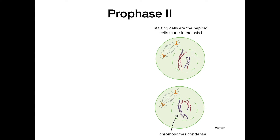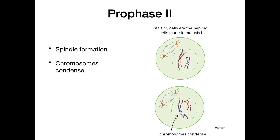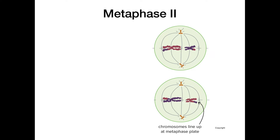Moving on to meiosis 2 — we just finished meiosis 1, so now we move on to prophase 2. This is a pretty similar process to prophase of mitosis, though at this stage the cells are both haploid whereas in mitosis the cells are usually diploid. During prophase 2 we have spindle formation again, chromosomes recondensing, and the nuclear envelope breaking down again.